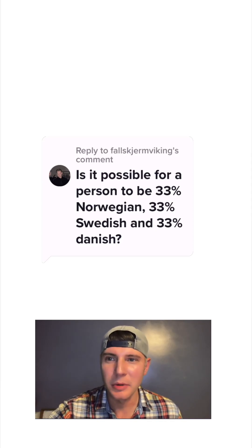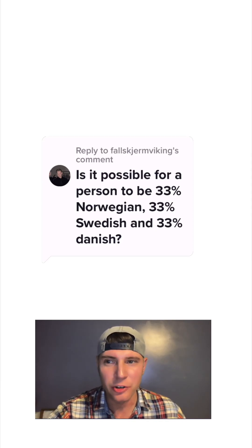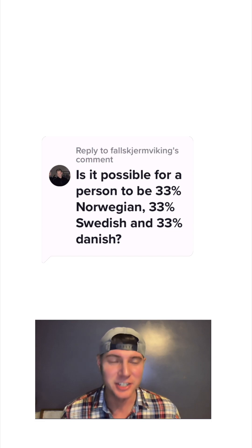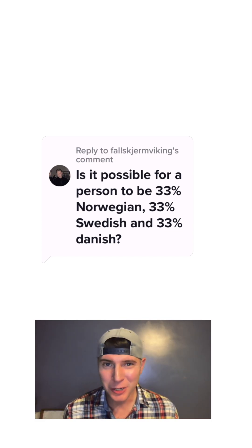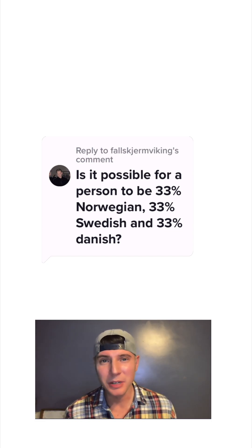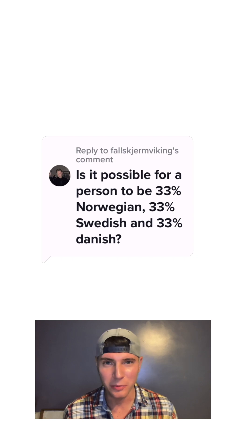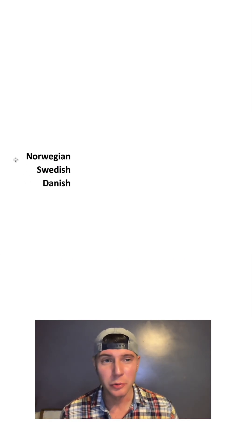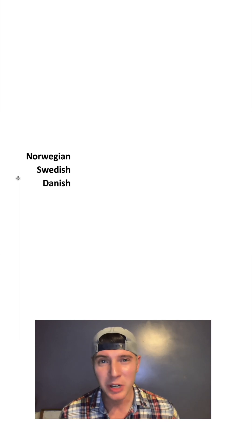Someone's asking: can somebody be 33% Norwegian, 33% Swedish, and 33% Danish? We cannot make a human being that's exactly one-third of each of those, but we can get somebody who would round to 33%. First, we need three people — one to be 100% Norwegian, one to be 100% Swedish, and one to be 100% Danish.